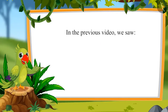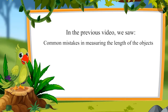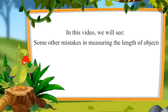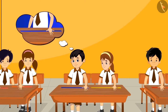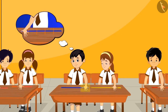Hello children. In the previous video, we saw some common mistakes in measuring the length of objects. In this video, we will see some other common mistakes. In Chotu's class, everyone was asked to bring five hand span long ribbons. Chotu also brought five hand span long ribbons measured by his hand.